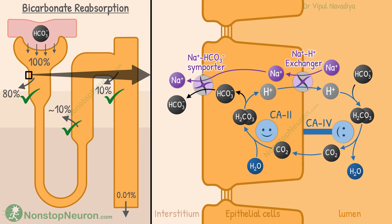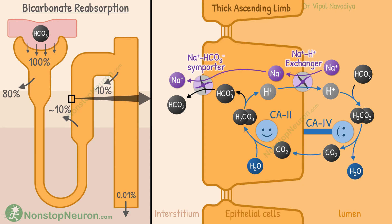The difference is seen only in the transporters of hydrogen and bicarbonate. In the proximal tubule, hydrogen is transported by the sodium-hydrogen exchanger and bicarbonate moves by the sodium-bicarbonate cotransporter. In the thick ascending limb, hydrogen again uses the sodium-hydrogen exchanger. However, the basolateral exit of bicarbonate occurs mainly by the chloride-bicarbonate exchanger.